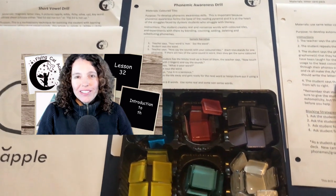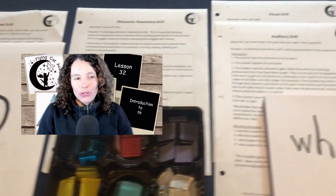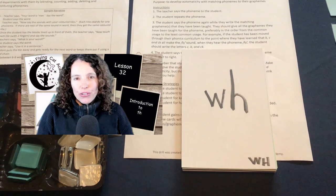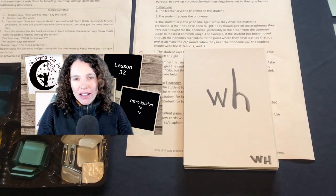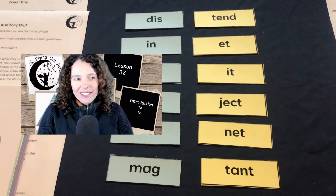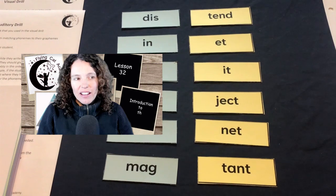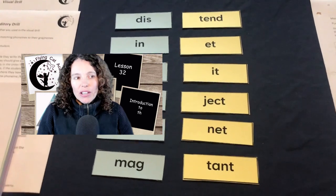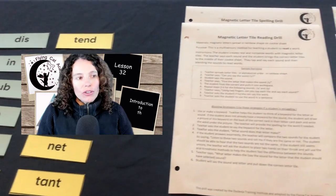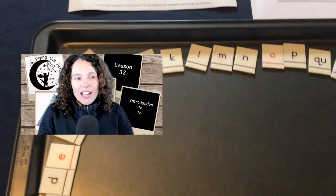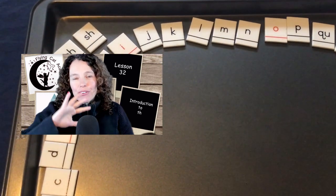For the phonemic awareness drill the instruction sheet is needed and the colored tiles for the student. Then for the visual drill and the auditory drill you need the teacher instruction sheet and the card pack for the student. Be sure to take out the cards once they're mastered — you'll notice that I've got WH in the pack right now because it was introduced in the last lesson. Then you have the syllable card drill for today's lesson, which is going to be all cut out in advance.